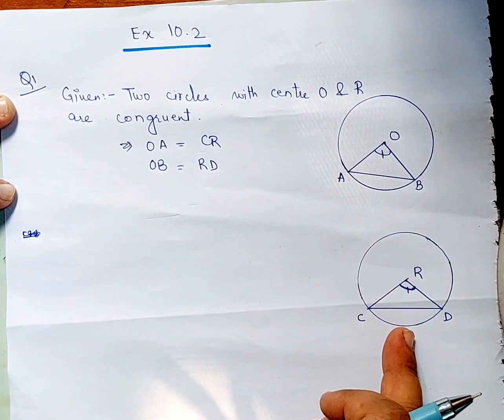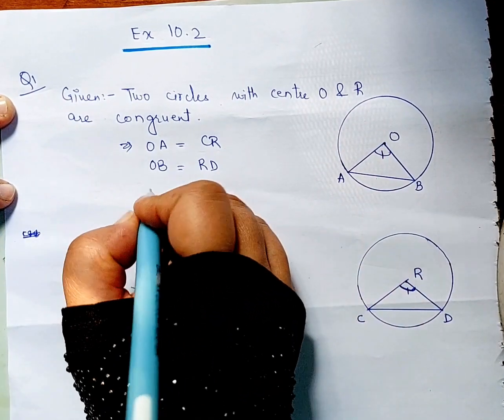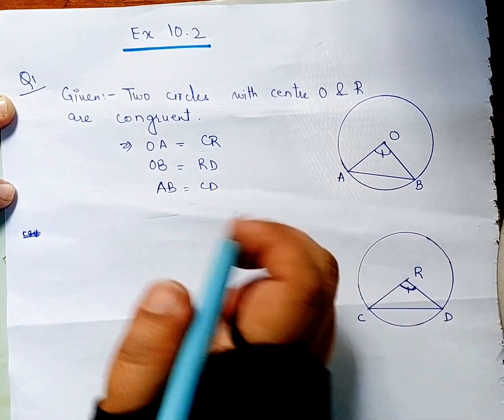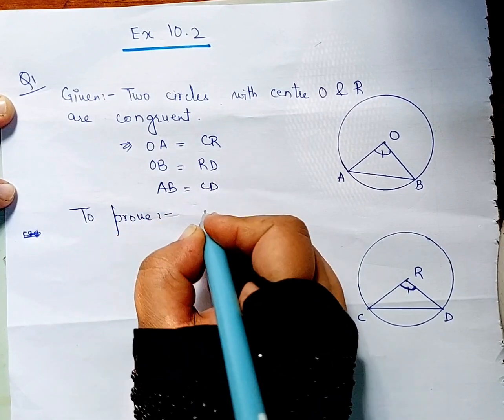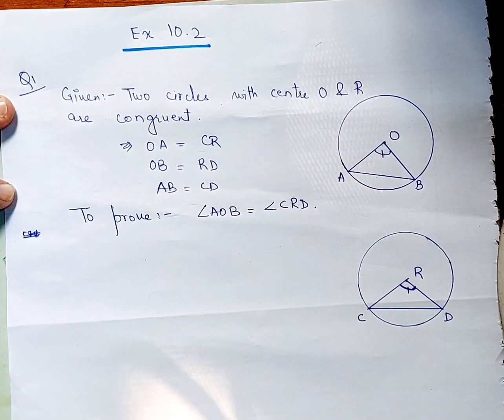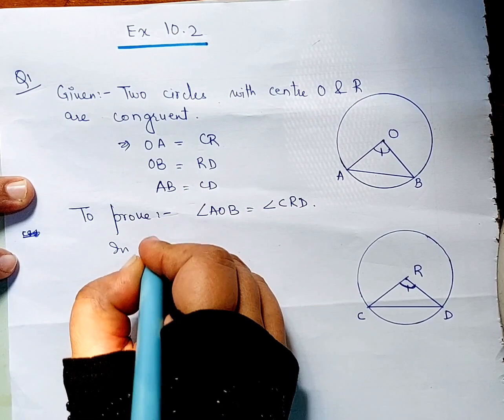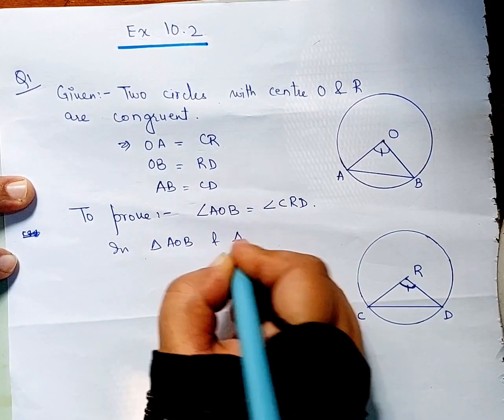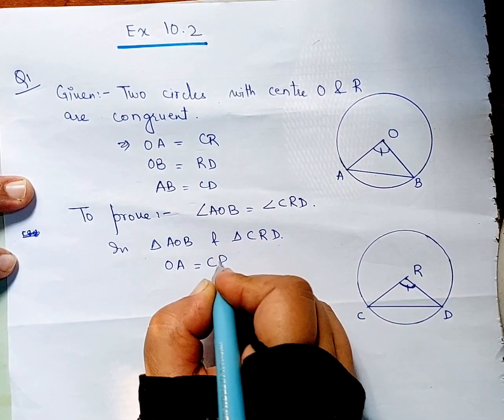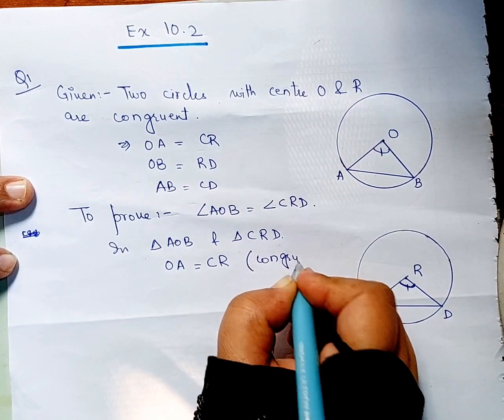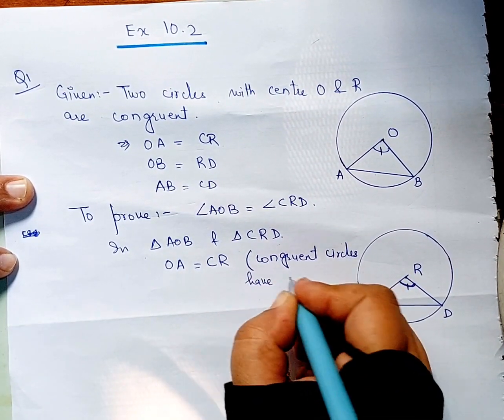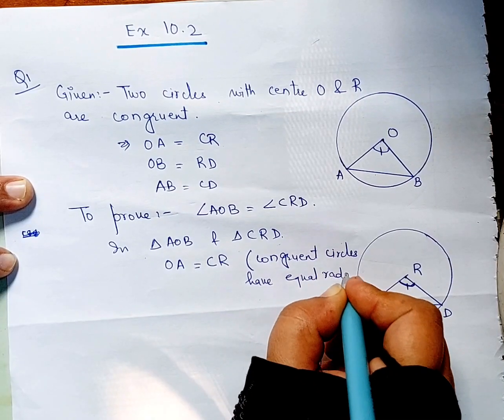If AB is equal to CD, then you have to prove that angle AOB is equal to angle CRD.